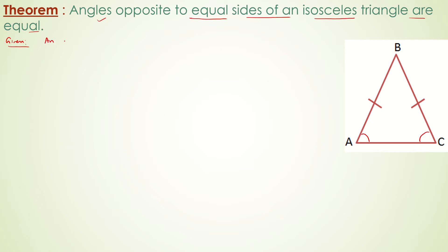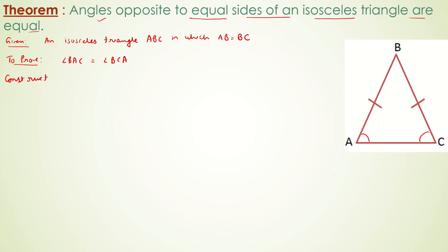Given: an isosceles triangle ABC in which AB is equal to BC. To prove: angle BAC equals angle BCA. To prove this, we will do a basic construction — draw the angular bisector of angle B.